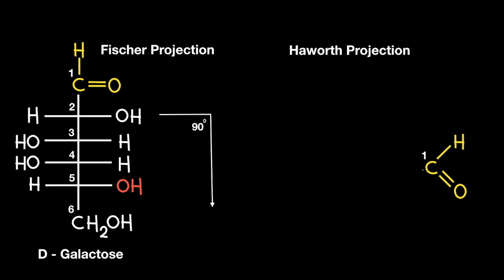So now we've got to bend this bond forward with the end point representing the position of the second carbon. In the Fischer projection on the left you can see that the OH group is pointing to the right, which means the OH in the Haworth projection will be pointing down, with its corresponding hydrogen pointing up.